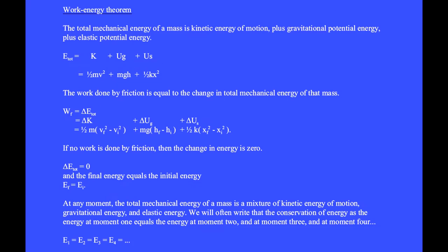The work done by friction is equal to the change in total mechanical energy of that mass. The change, delta, is always final minus initial. The change in total energy equals the change in kinetic plus the change in gravitational plus the change in spring energy. So the work-energy theorem is: the work done by friction equals ½m(vf² − vi²) plus mg(hf − hi) plus ½k(xf² − xi²).